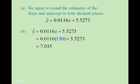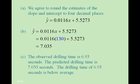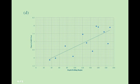Now we look at whether the observed drilling time at 130 feet is above or below average. The observed drilling time is 6.93 seconds and the predicted drilling time we found was 7.035 seconds. So the drilling time of 6.93 seconds is below average. Here we see the least squares regression line drawn on top of the scatter diagram for the data.